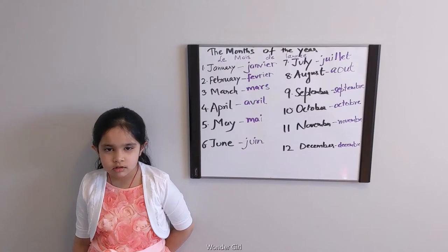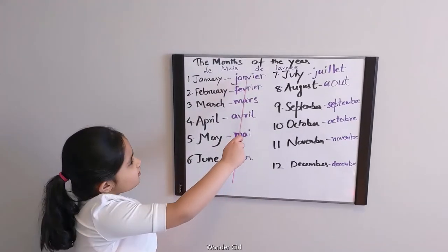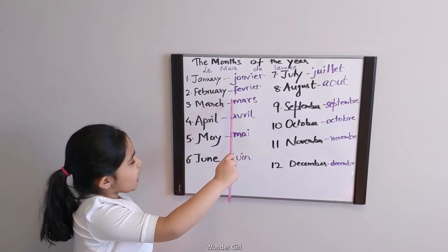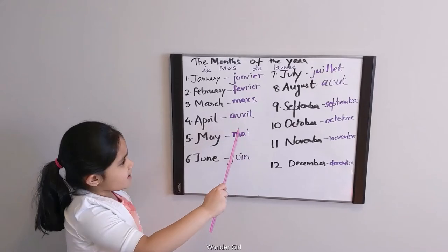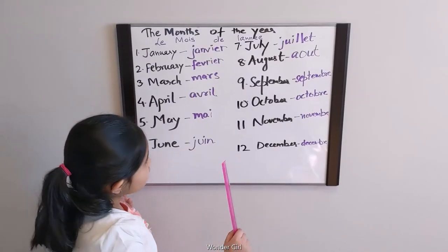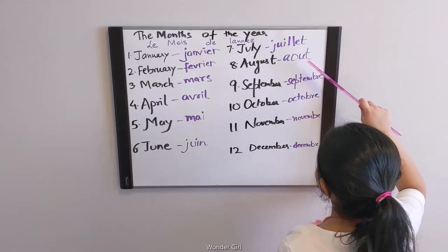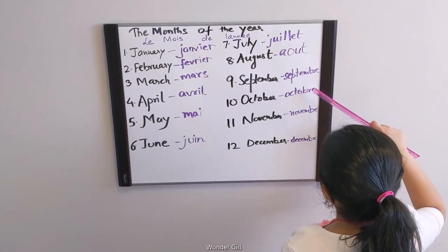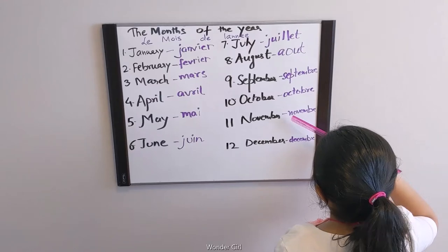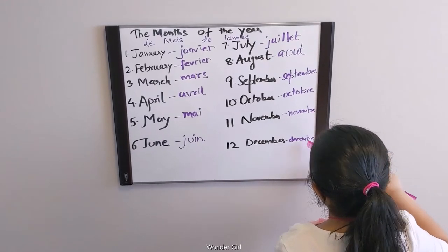I'm going to tell you the months of the year in French. January, janvier. February, février. November, novembre. December, décembre.